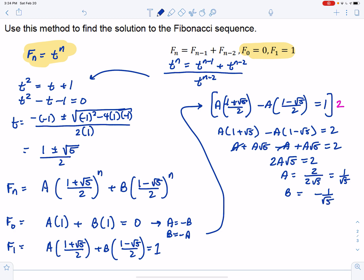So that means Fibonacci, the nth Fibonacci number is 1 over root 5 times 1 plus root 5 over 2 to the n, minus 1 over root 5, 1 minus root 5 over 2 to the n.